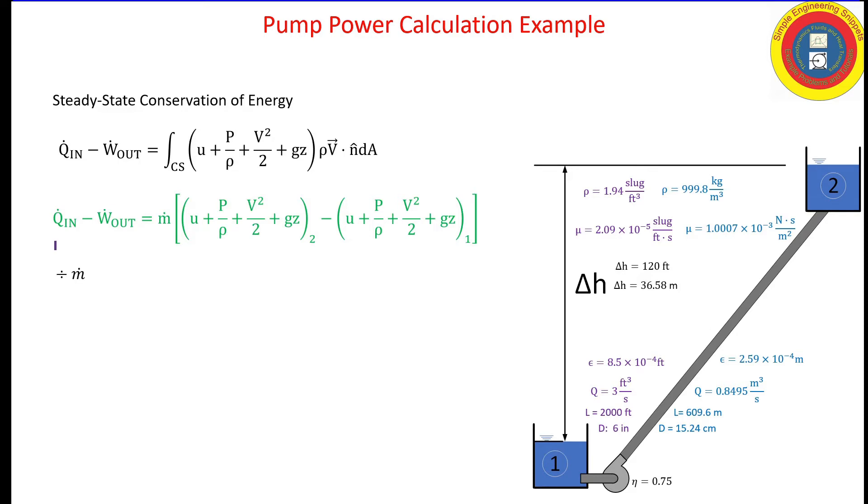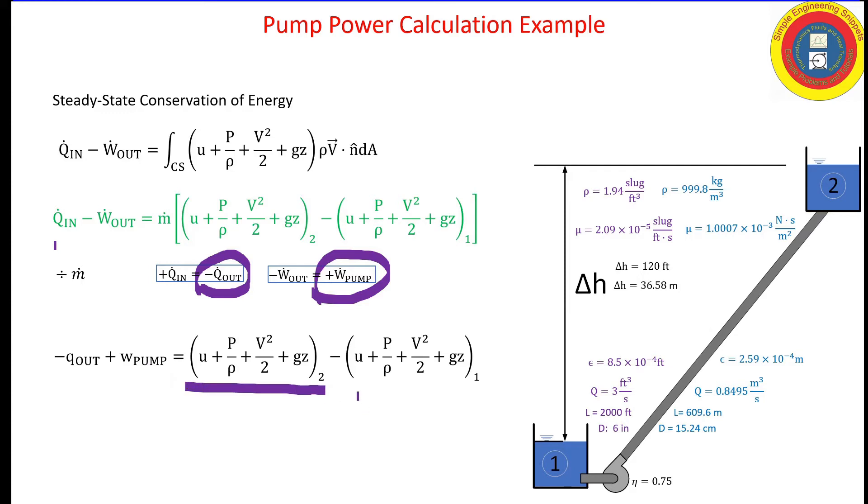Now we are going to divide through by the mass flow rate, all the terms by mass flow rate. Let's make our substitutions because we're actually worried about heat transfer out of the system and we are trying to solve for the work of the pump. When we do that, we get the specific heat transfer out, the specific work of the pump, plus the energy left over minus the energy that we start with.